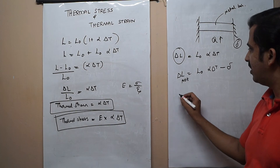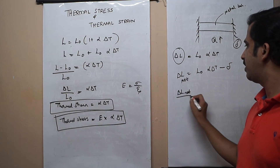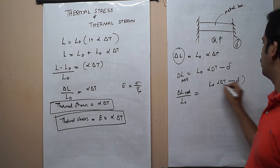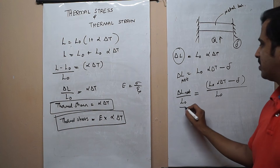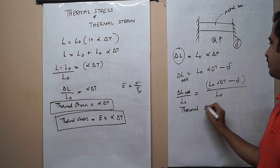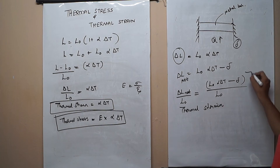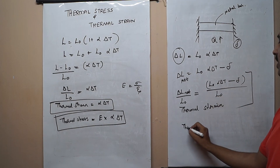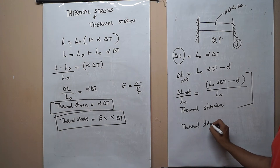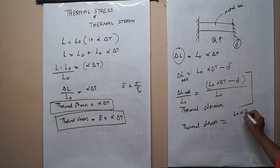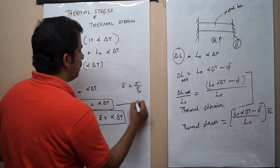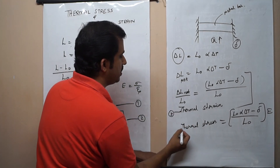We can divide this net ΔL by L₀. So thermal strain = (L₀·α·ΔT − δ) / L₀. This is the equation for thermal strain in the case where the fixed end yields. For calculating the thermal stress, we multiply the thermal strain by Young's modulus: thermal stress = E × (L₀·α·ΔT − δ) / L₀. All four of these equations are necessary for solving the problems — expressions 1 and 2 assume no yielding; expressions 3 and 4 account for yielding of the side bars.